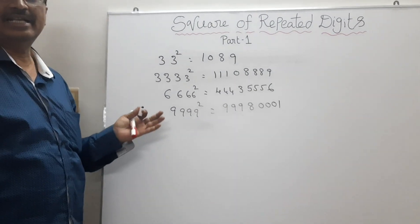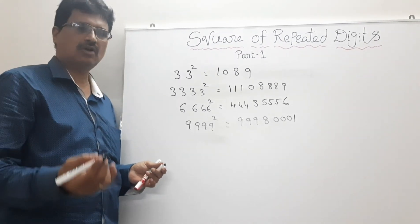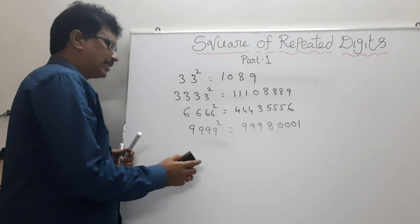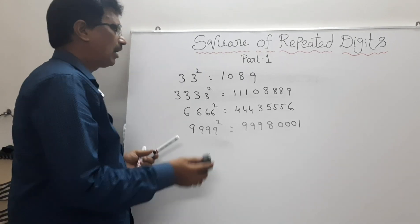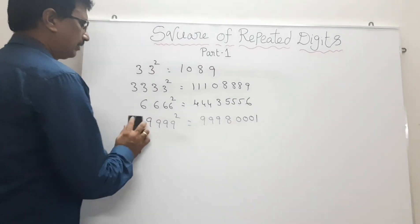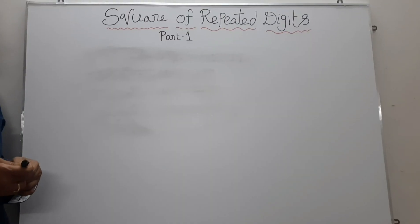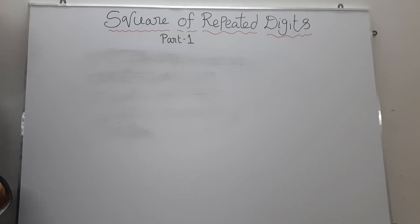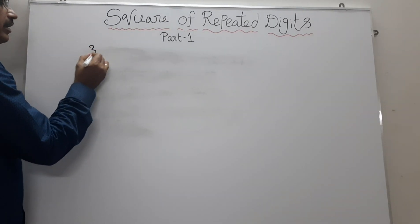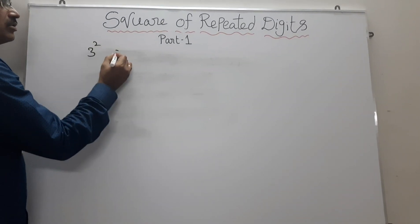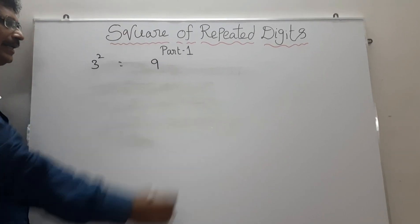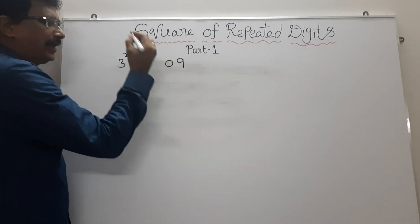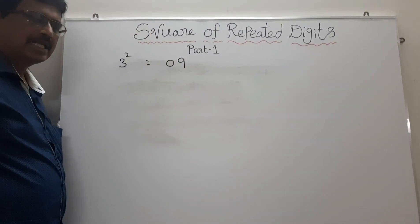By seeing the number, we can able to see the squares of repeated digits. First, we discuss the square of 3. We will discuss the square of the repeated digits of 3. We know that 3 squared equals to 9, but here we will take 09.